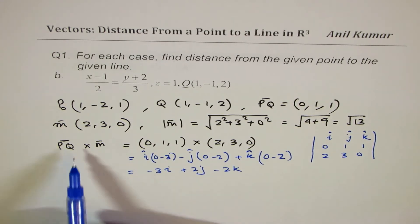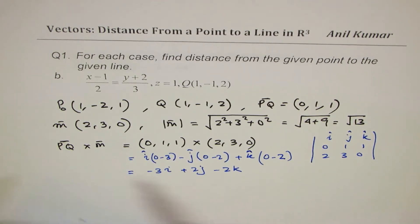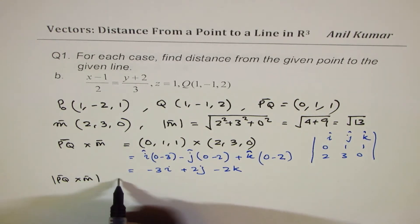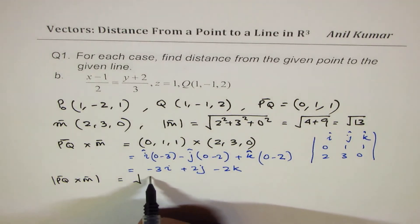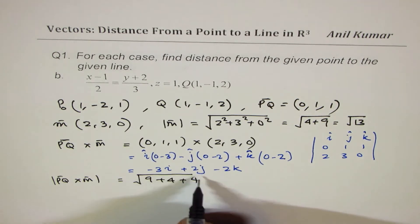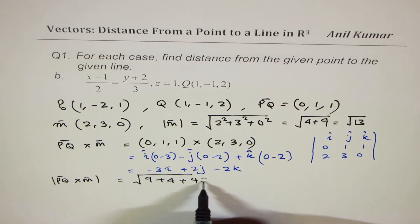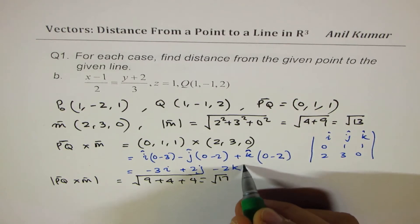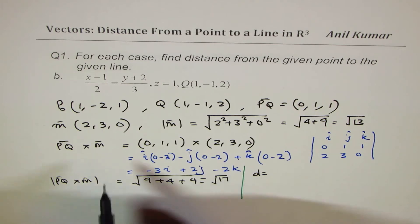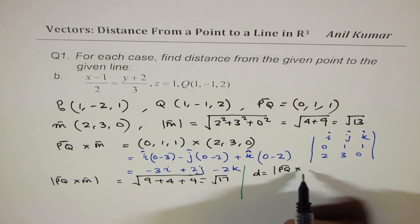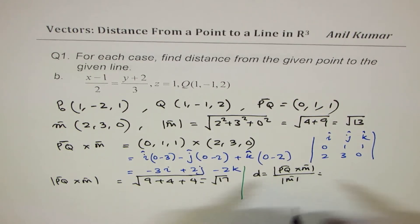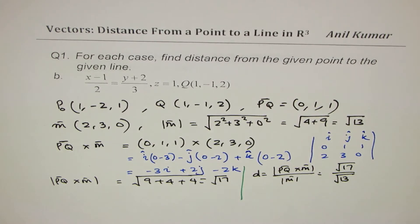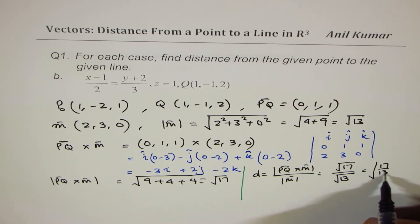That becomes the cross product. The magnitude of PQ cross M is the square root of 3 squared plus 2 squared plus 2 squared, which is the square root of 9 plus 4 plus 4, giving the square root of 17. So the distance formula is the magnitude of PQ cross M over the magnitude of M, which gives us the square root of 17 over the square root of 13, so our answer is the square root of 17 over 13.